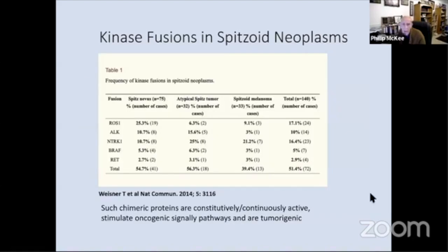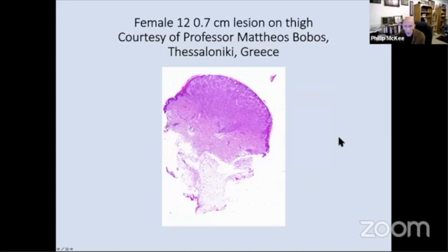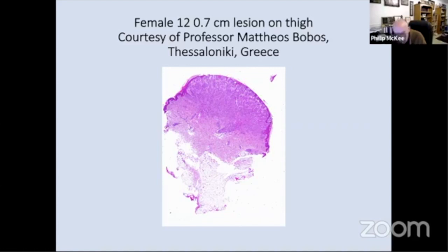From another table in Weisner's paper looking at a total of 140 cases, spitz nevi show kinase fusions in roughly 55%, atypical spitz tumors in 56%, and roughly 40% of spitzoid melanomas. That's the background. Now I'm going to show you a number of examples, and I can't stress how grateful I am to all of my friends on McKee Derm who have so generously shared cases with me — without whose cases I would not be able to give this presentation.